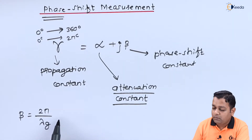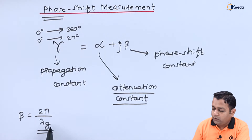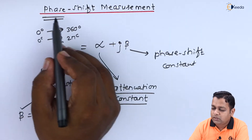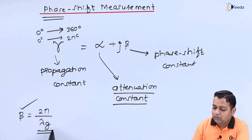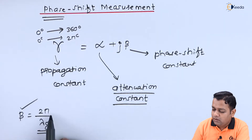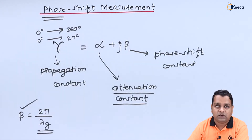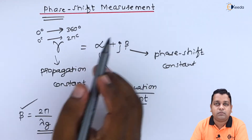For the microwave signal inside the waveguide, the wavelength is represented by the guide wavelength lambda-g. If we can measure how many wavelengths inside the waveguide have been covered, we can obtain the phase shift constant beta. The relationship between lambda-g and beta involves the constant 2π, so knowing lambda-g allows us to determine beta and thereby complete the phase shift measurement.